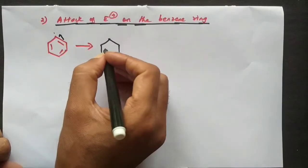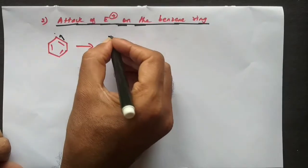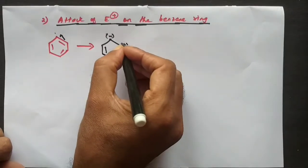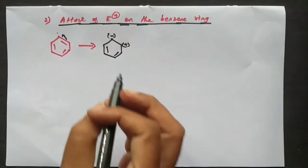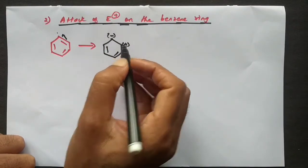So this carbon will become negative and this will become positive, and this is stable because of the sigma complex that we already discussed in the last two videos.